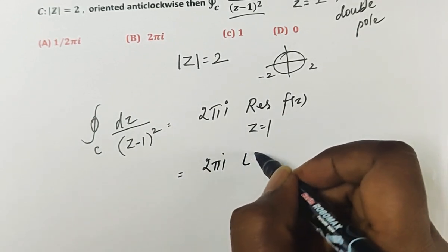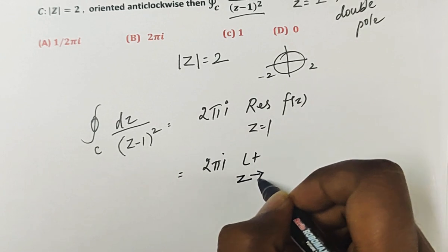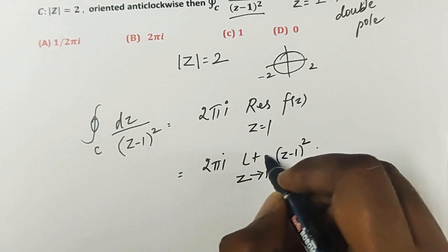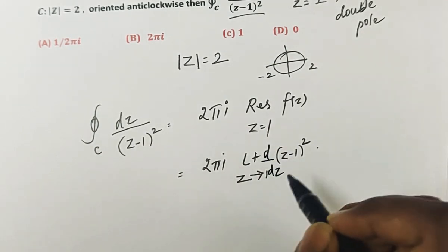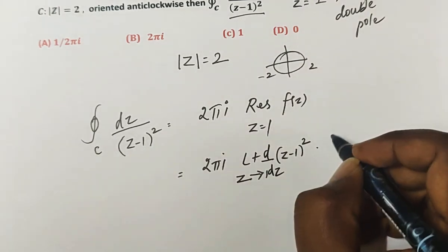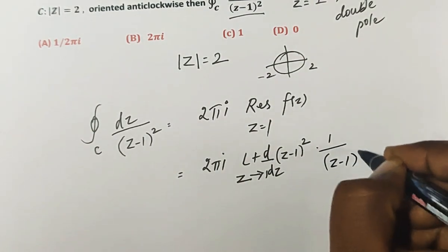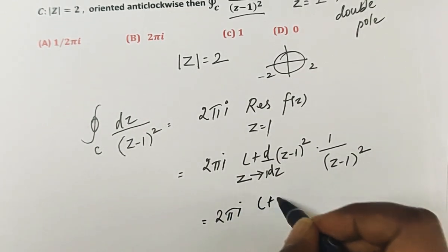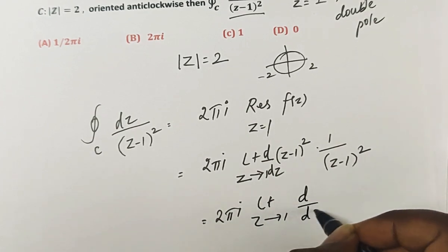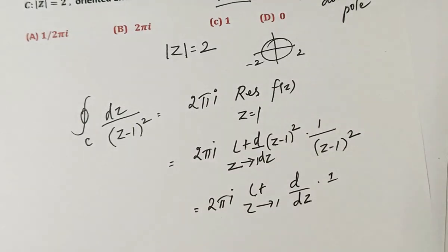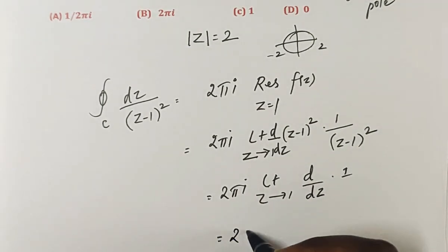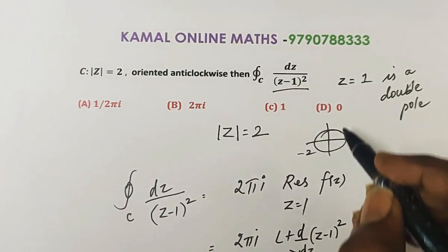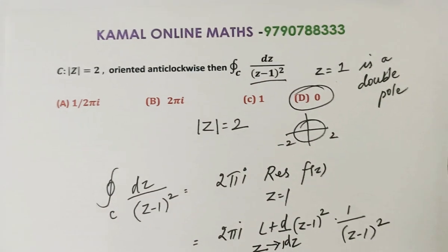By the residue theorem, the integral equals 2πi times the residue at z = 1. For a pole of order 2, the residue is the limit as z → 1 of d/dz[(z−1)² · 1/(z−1)²] = d/dz[1] = 0. So 2πi · 0 = 0. The integral value is 0, option D.